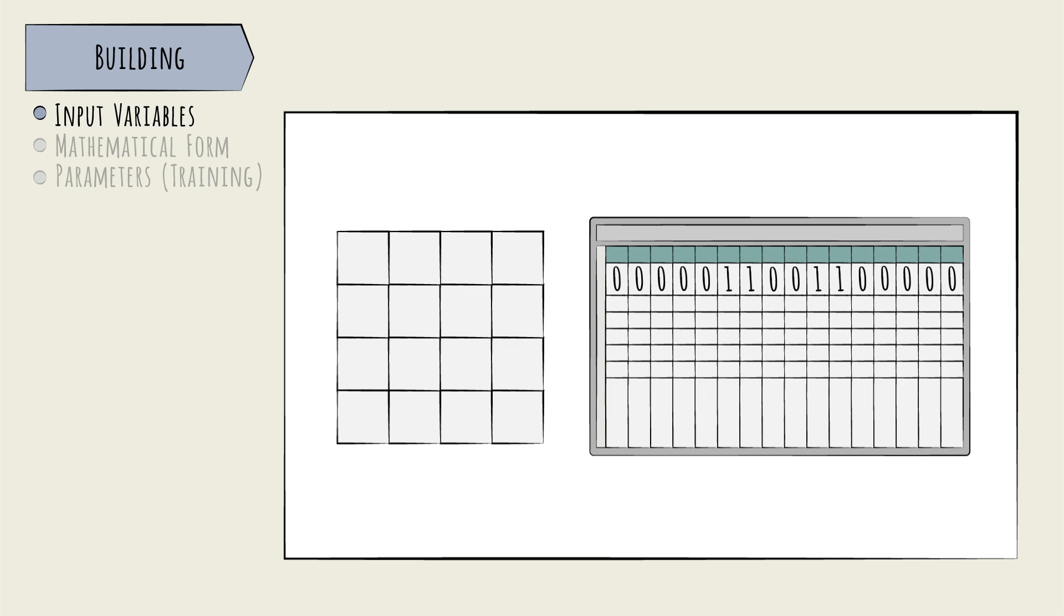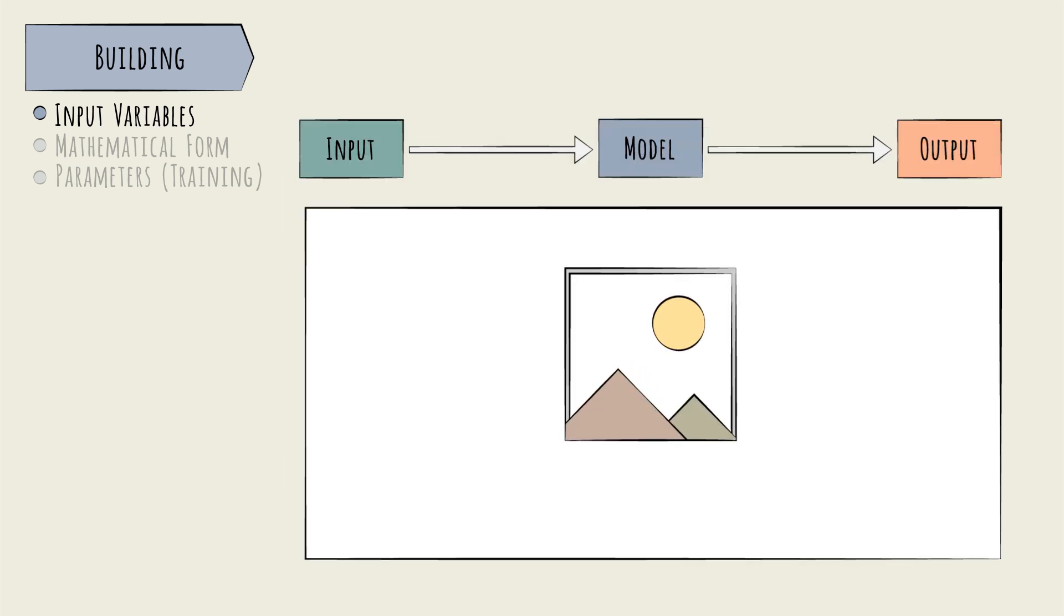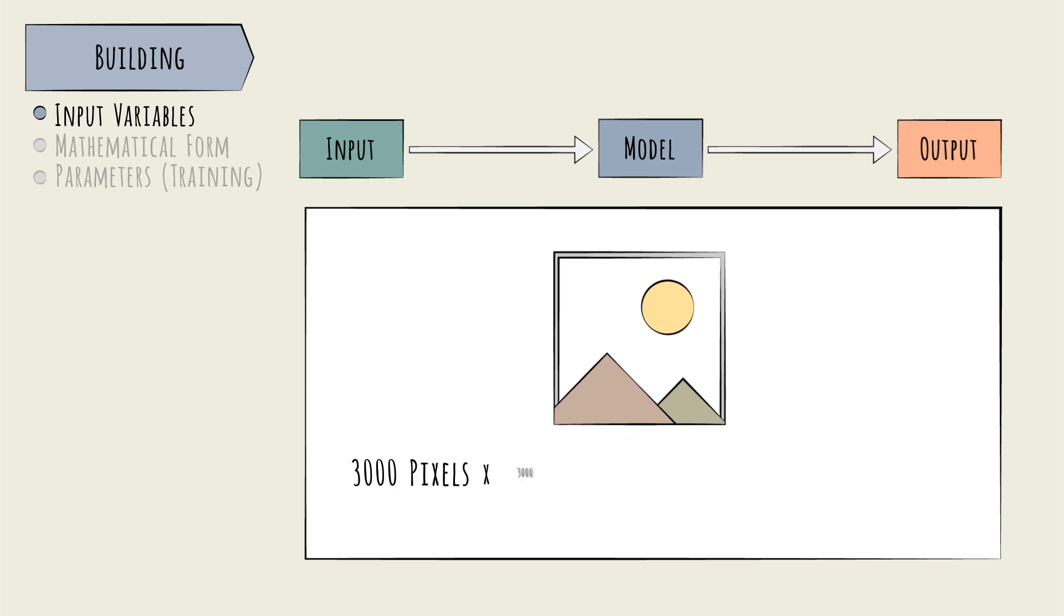Easy, right? Well, real-world images would be much larger – 3,000 to 4,000 pixels in each dimension and in color. Transforming a 3,000 by 3,000 image with 3 pixel colors in the same way leads to a row with 27 million columns. That's a lot of input variables.